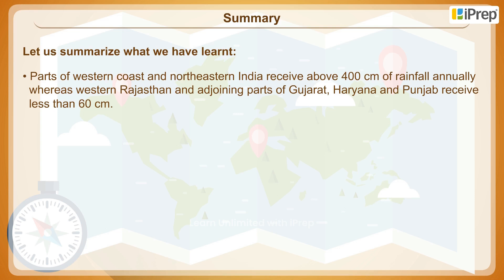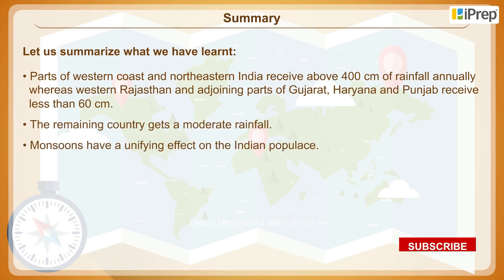Parts of western coast and northeastern India receive above 400 centimetres of rainfall annually, whereas western Rajasthan and adjoining parts of Gujarat, Haryana and Punjab receive less than 60 centimetres. The remaining country gets a moderate rainfall. Monsoons have a unifying effect on the Indian populace.